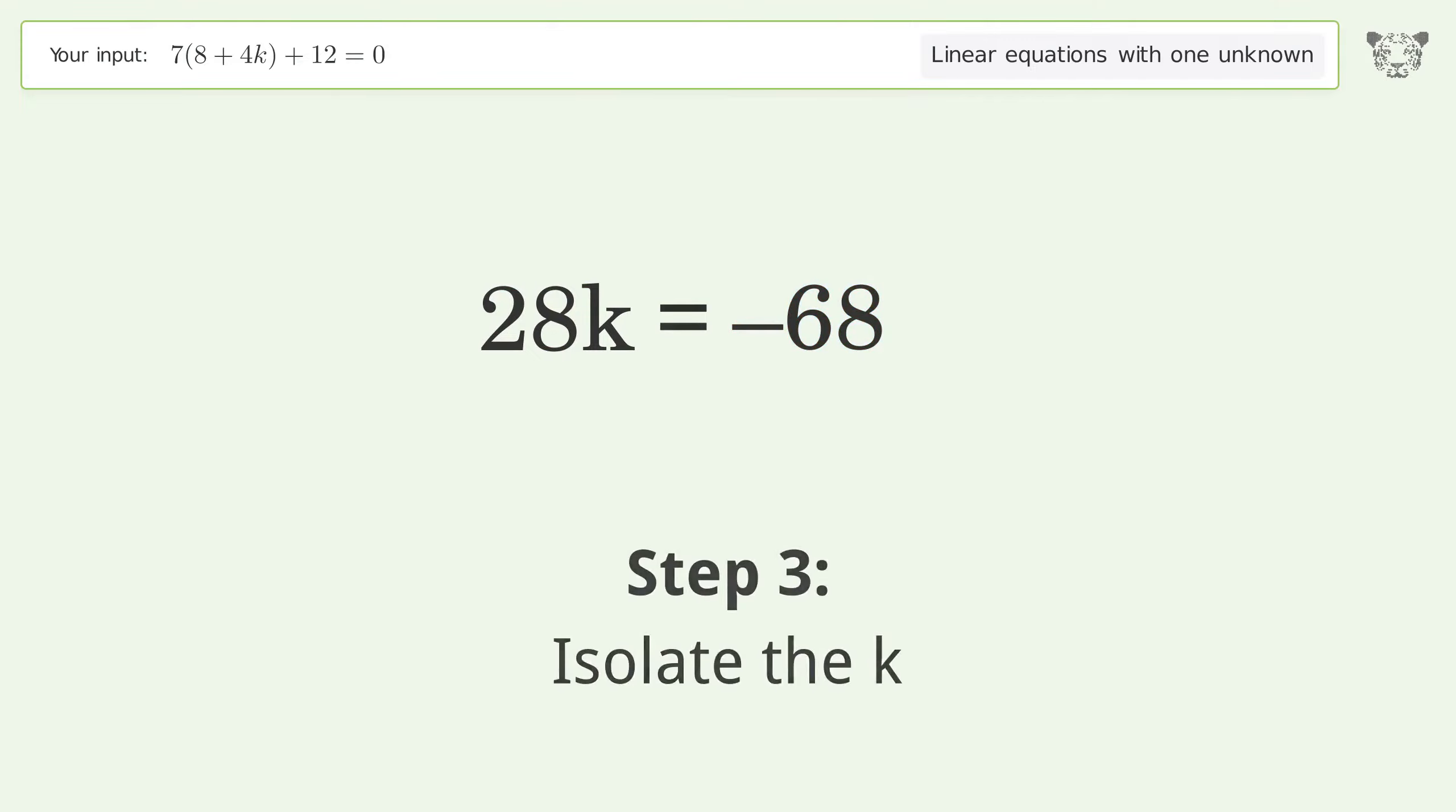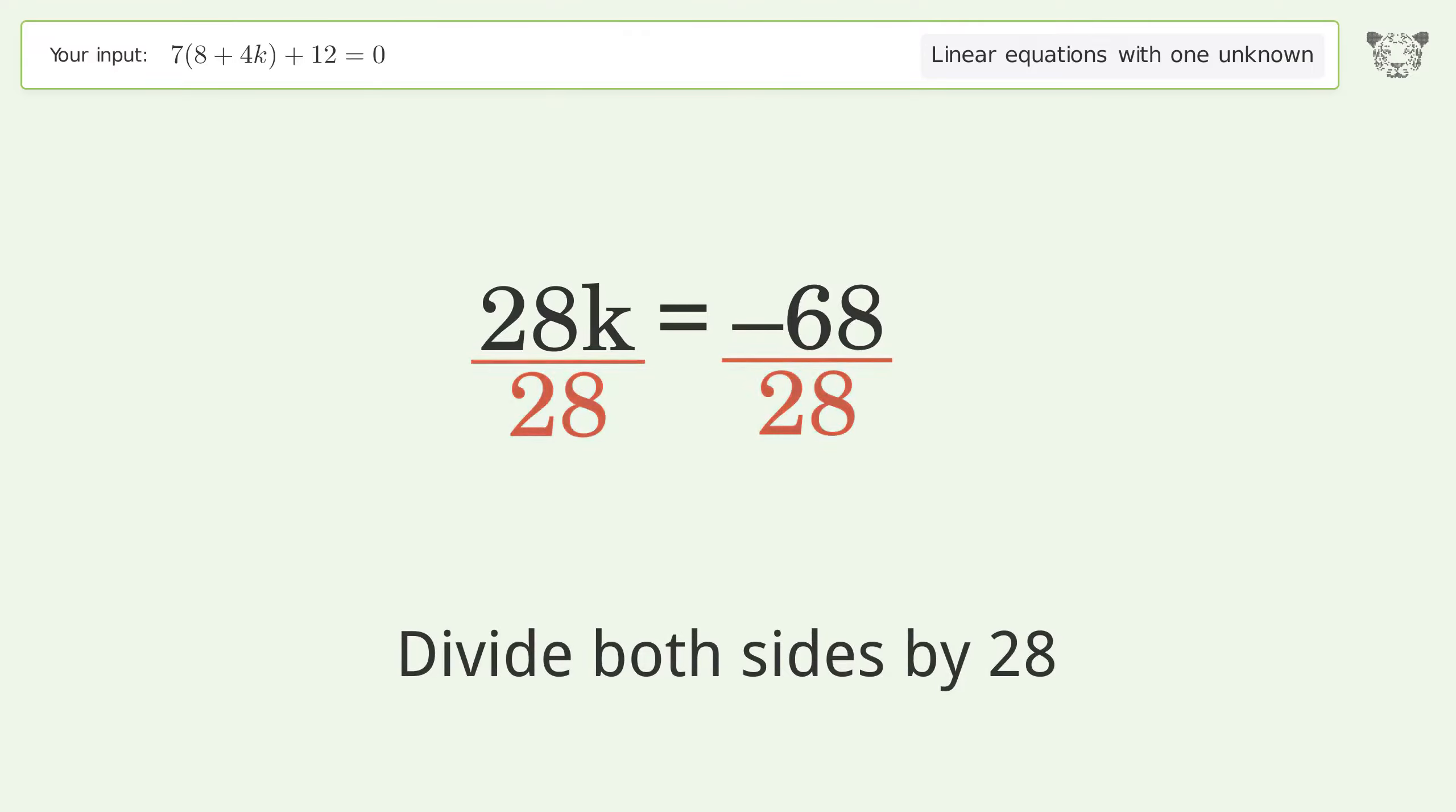Isolate the k. Divide both sides by 28. Simplify the fraction.